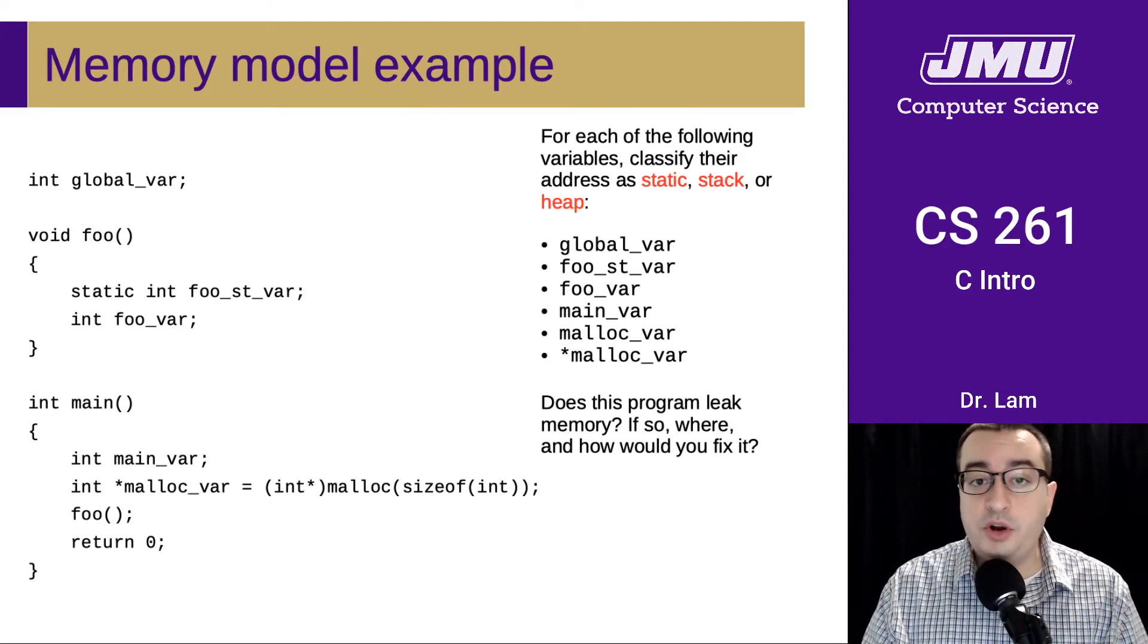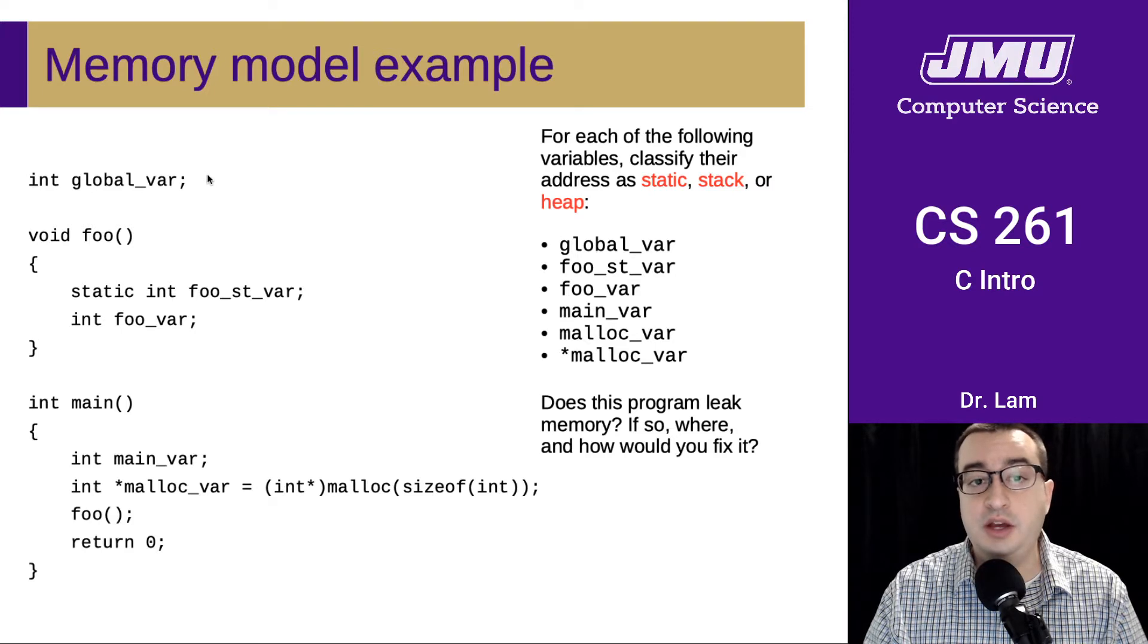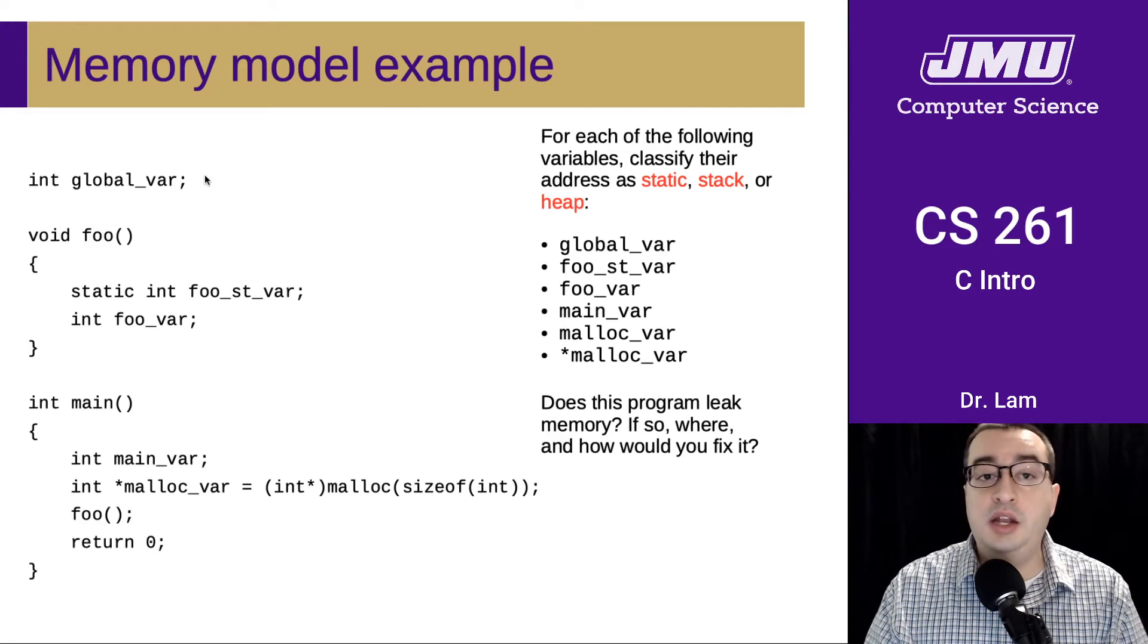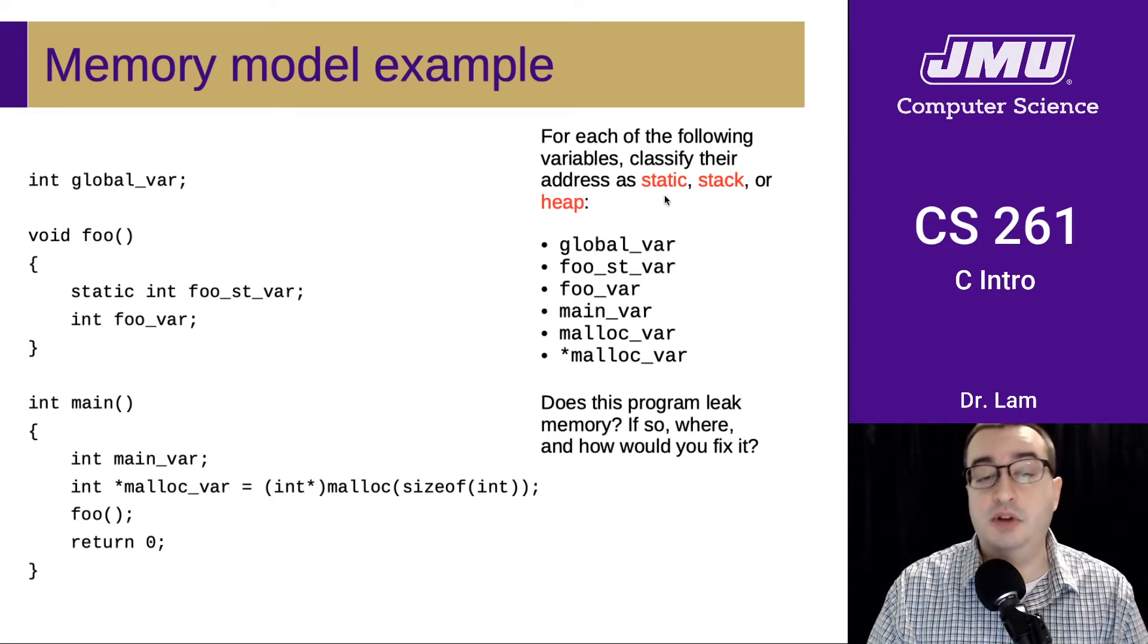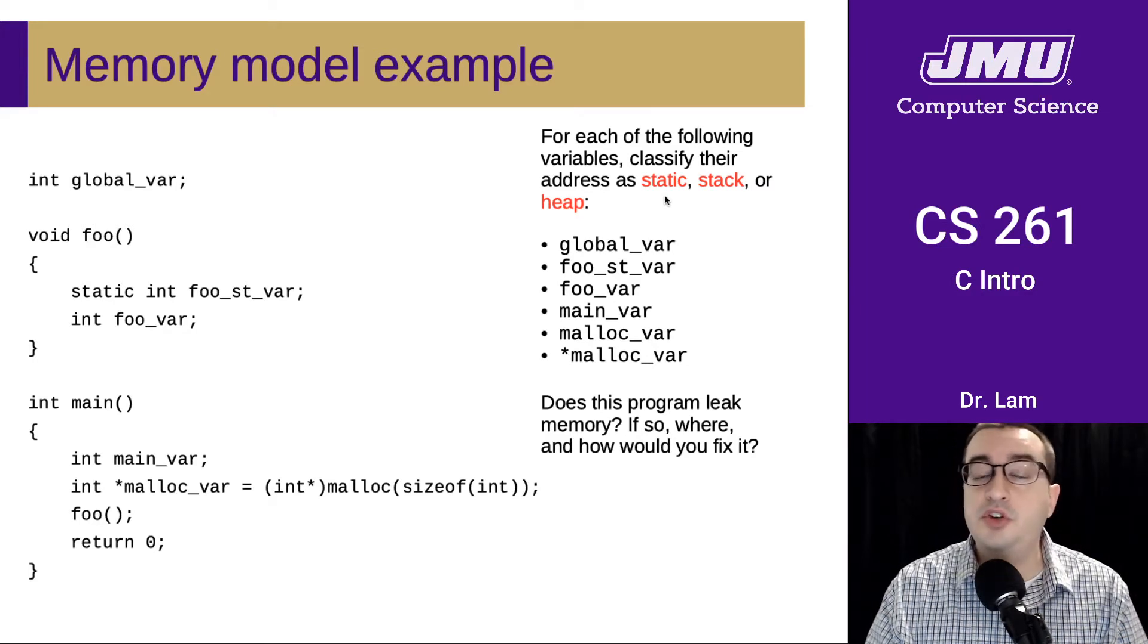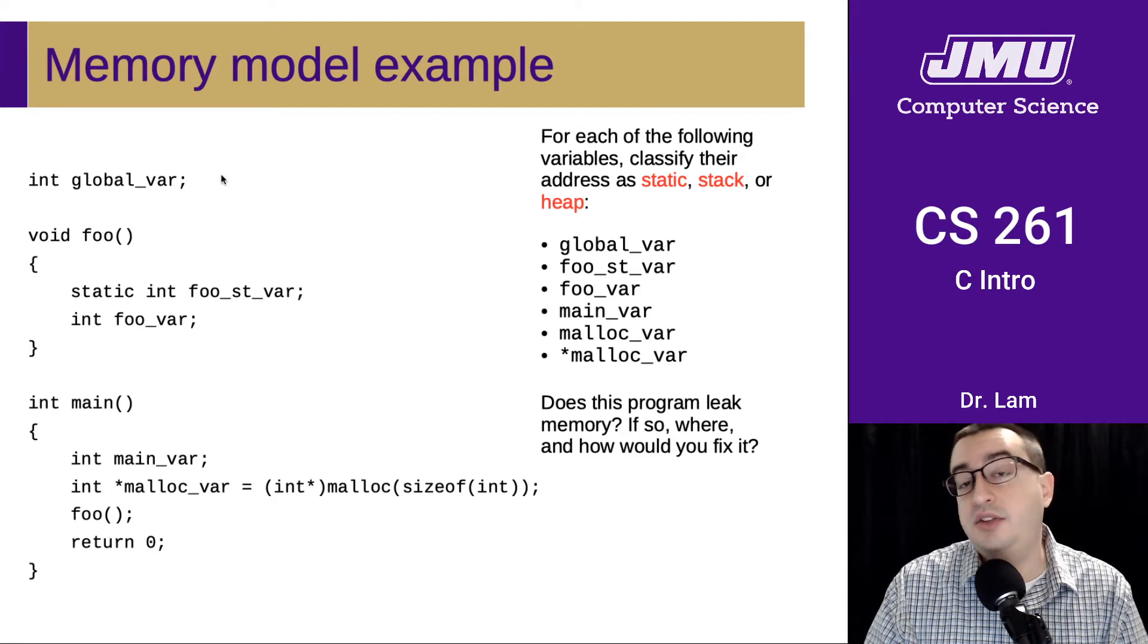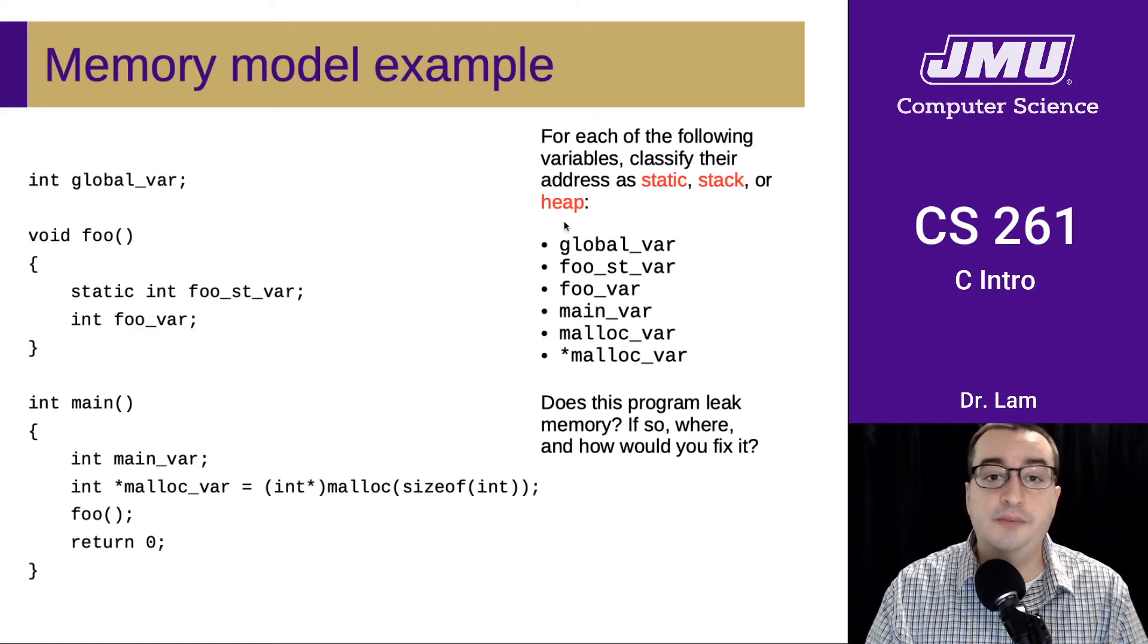Let's work through these. The first variable is global_var, and we can see that global_var is declared right here. So this is going to be a global variable. And we learned that global variables are generally stored in the static region. In terms of their scope, they're visible throughout the program, and their lifetime is static. It's going to be allocated when the program begins executing, and it's going to be deallocated when the program is done executing.